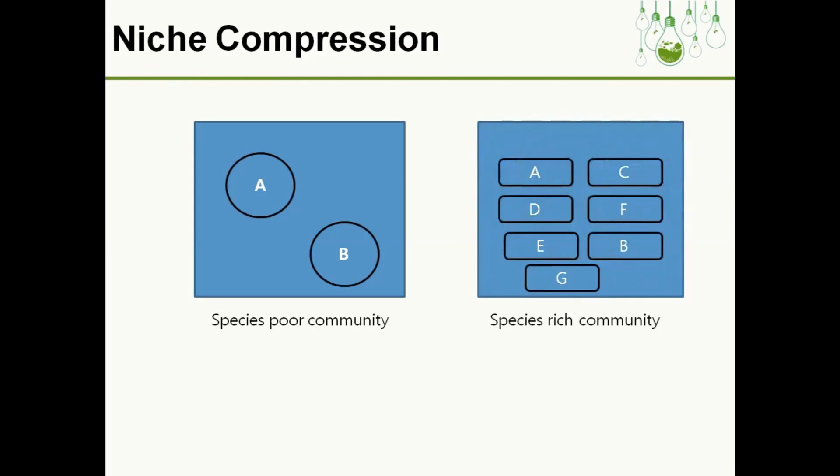The next concept is niche compression. This can be explained by two different community types: species-poor community and species-rich community. When the community is species-poor, inhabited by only two species A and B, both have a wider niche. But when more species invade this habitat, species A and B restrict themselves to a smaller area to avoid competition.